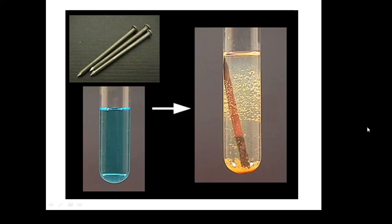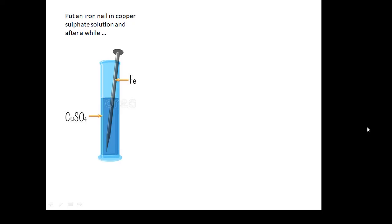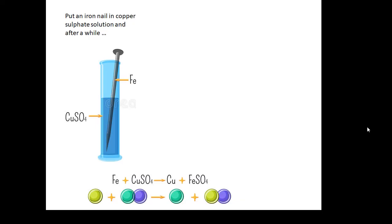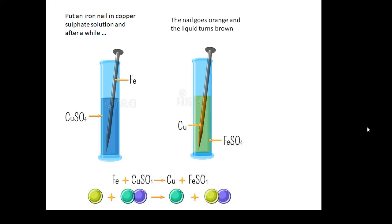What has happened? You put an iron nail in copper sulphate and after a while it's iron plus copper sulphate going to copper plus iron sulphate. The nail goes orange because it gets covered in copper - it gets plated in copper. And the copper sulphate changes into iron sulphate. The iron has taken the place of the copper, and the copper has been kicked out. It has been displaced.